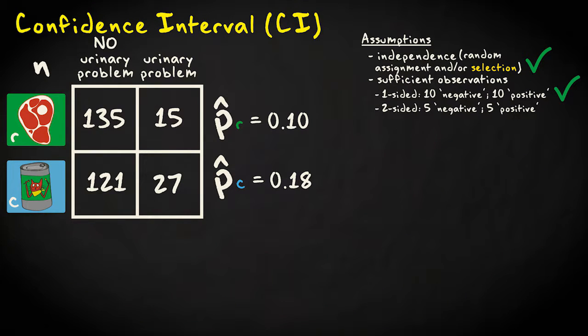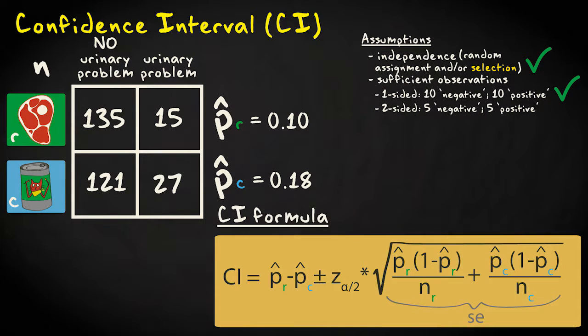We can calculate a confidence interval for the difference in proportions using this formula: the difference in sample proportions plus and minus z times the standard error. Plus and minus z equals the z values associated with the required confidence level, so for example, minus 1.96 and plus 1.96 for a 95% confidence interval.